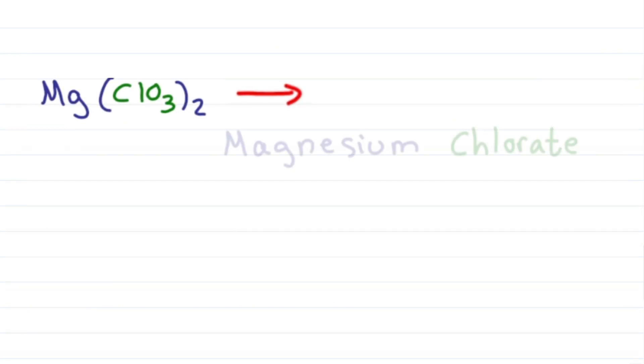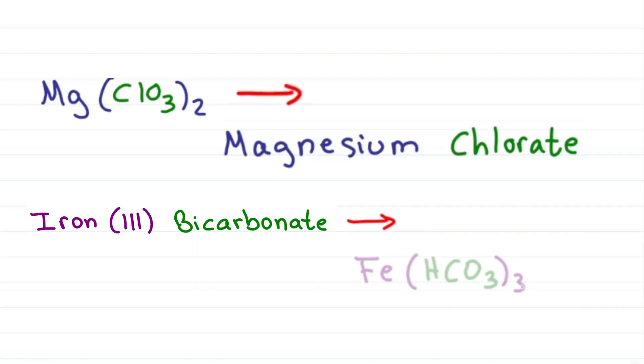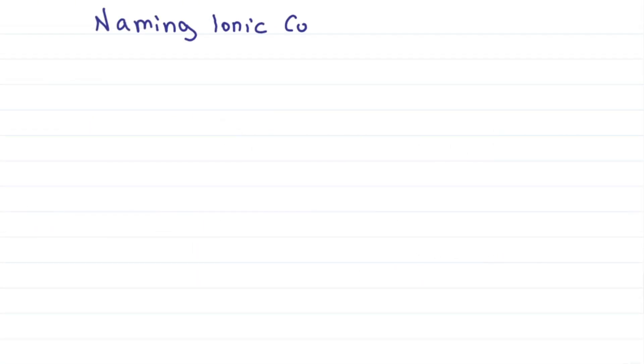Before we learn how this is magnesium chlorate, or that iron 3 bicarbonate is drawn like this, let's start with the basics of naming ionic compounds.